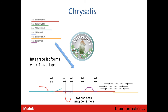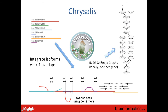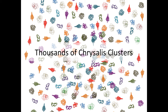In the Chrysalis framework, starting with Inchworm contigs, we integrate isoforms based on k-1 overlaps. The reads are used as 'glue' to link contigs together. We also use paired-end RNA-seq information to associate Inchworm contigs with each other, even when they lack a k-1 overlap. Once we have these clusters, we build the de Bruijn graph structure — this is how we end up with many thousands of separate graphs, partitioning all the data by gene.